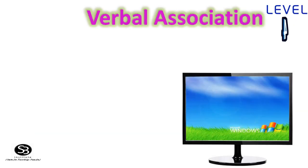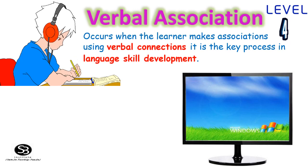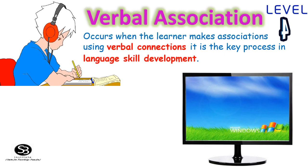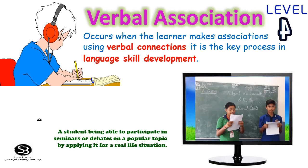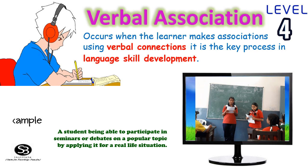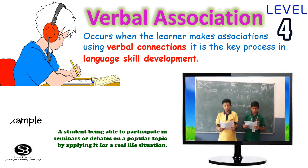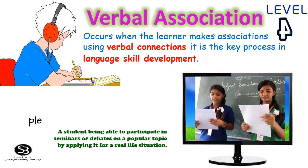Verbal Association occurs when the learner makes associations using verbal connections. It is the key process in language skill development. For example, a student being able to participate in seminars or debates on a popular topic by applying it to a real-life situation is Verbal Association.